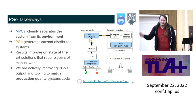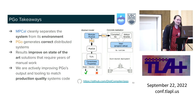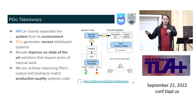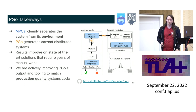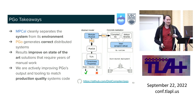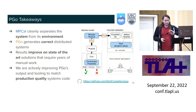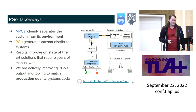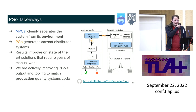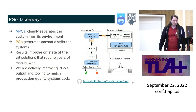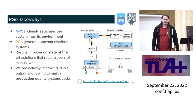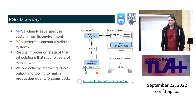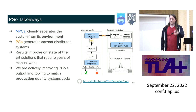To summarize: MPCal separates a system from its environment; you can use it to compile correct distributed systems. Our results now improve on the state of the art we're aware of in the spec-to-code sector, and we are actively trying to continue improving and eventually match production-quality code in various ways.